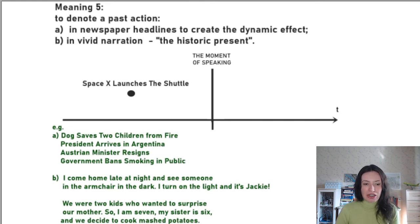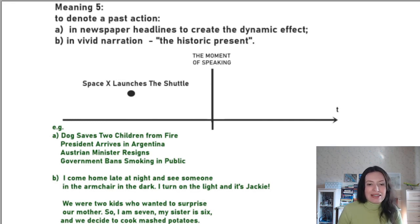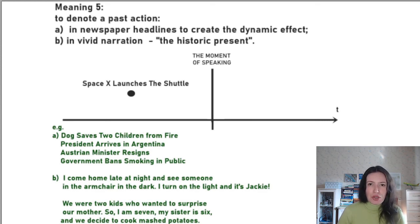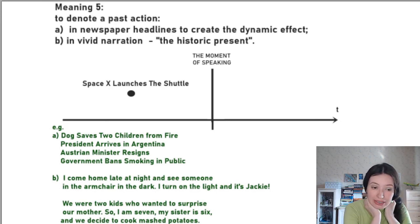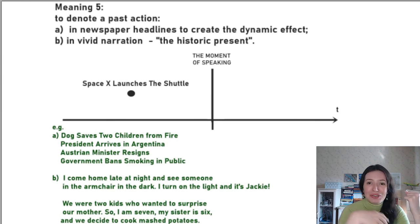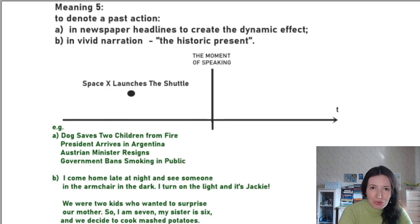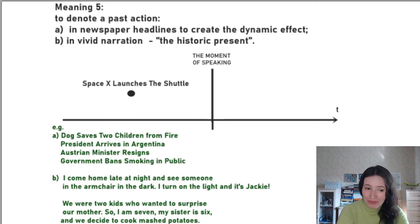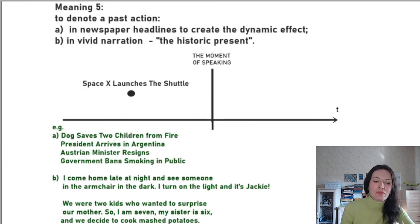In Russian you'd use the past indefinite; in English you use the present indefinite to make it more dynamic. The second case is natural for all European languages: vivid narration. Speakers often start speaking in the present about past events. For example in Russian: 'Вчера был такой случай — прихожу я домой, открываю дверь, включаю свет, а в кресле сидит Джек.' I shifted into the present as soon as I wanted you to feel captivated with the story.